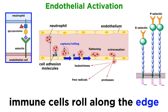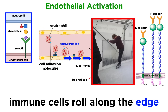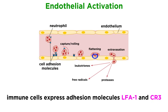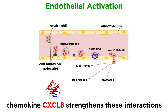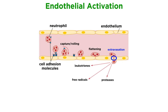Instead of flowing through the blood vessels, these immune cells begin to roll along the edge of the blood vessel, kind of like a nervous ice skater clinging to the edge as they move around the rink. Eventually the immune cell will express adhesion molecules like LFA1 and CR3, which interact with ICAM1 and ICAM2 on endothelial cells. Chemokines like CXCL8, which are increased during inflammation, strengthen these interactions between immune cells and endothelial cells, until the immune cell completely stops rolling and is stuck to the outside of the endothelium. The immune cell then extravasates, or moves between endothelial cells to get into the tissue.